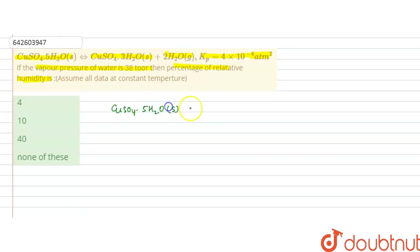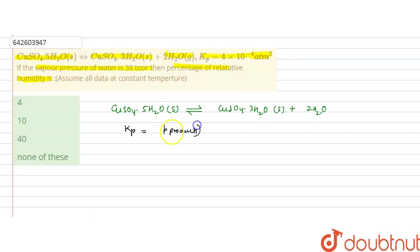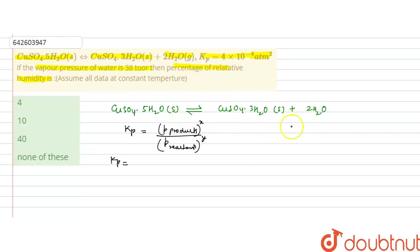Writing the reaction: CuSO4·5H2O solid ⇌ CuSO4·3H2O solid + 2H2O. Kp for this reaction is given. Kp is the partial pressure of the products raised to the power of their stoichiometric coefficient, divided by the partial pressure of the reactants raised to the power of their stoichiometric coefficient. The products are CuSO4·3H2O solid and 2 water. But the partial pressure of pure solids and pure liquids is assumed to be one.